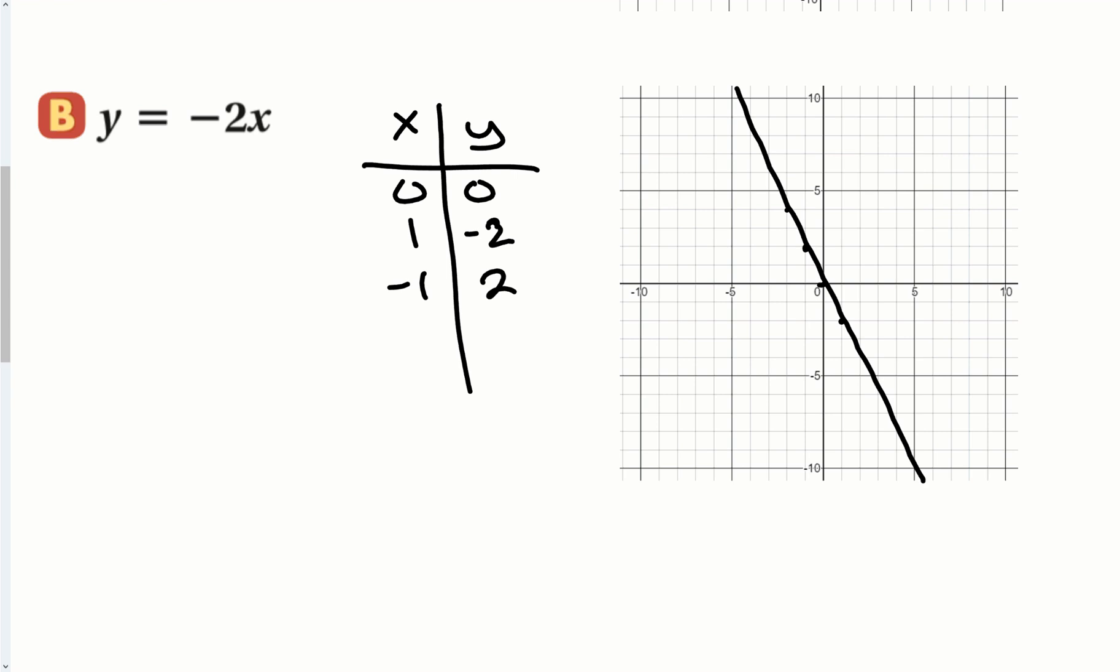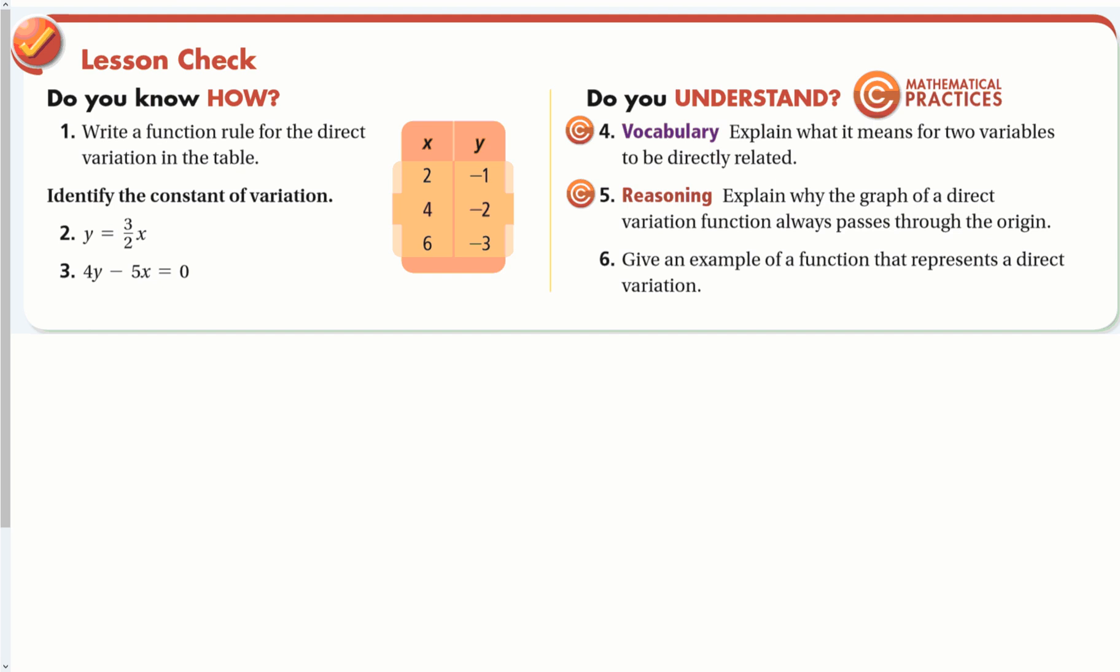And there's my graph. Direct variation as x goes up, y goes up, but this negative two sort of reverses that. So as x goes up, y is going to be going down in this case, but the ratio is always the same. The slope is always the same of this line.